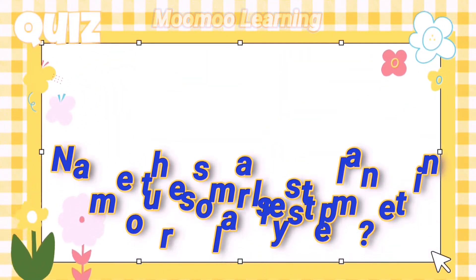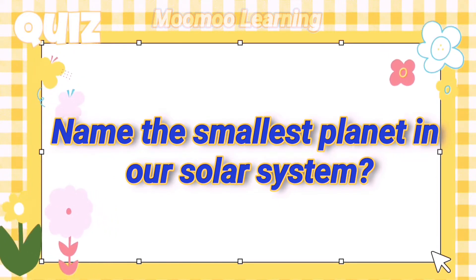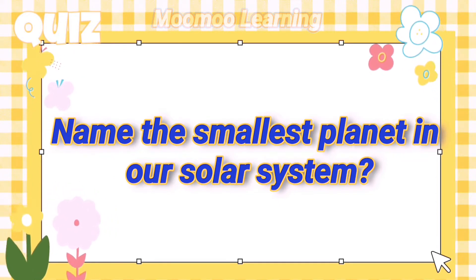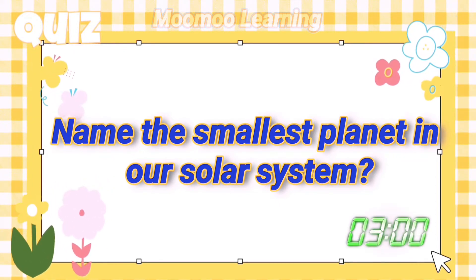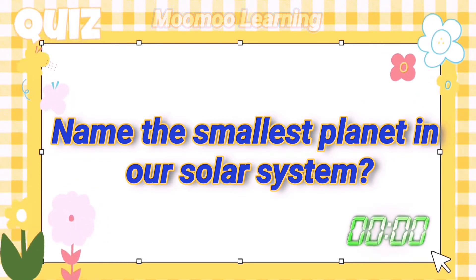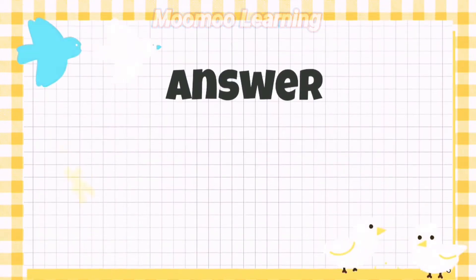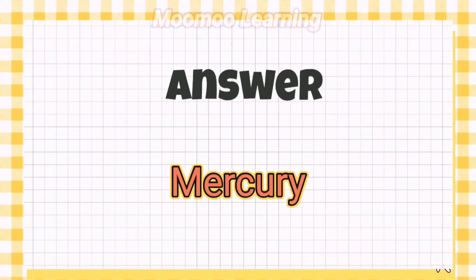Name the smallest planet in our solar system. Answer: Mercury.